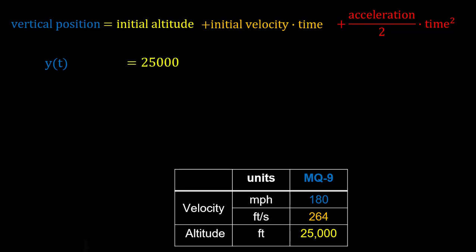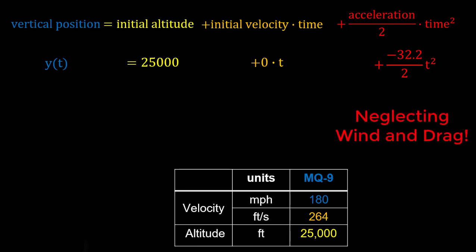And that's going to equal our initial altitude of 25,000 feet plus our initial velocity, which is 0 because we're just dropping it. And finally, our acceleration, which is going to be negative 32.2 feet per second squared because it's going downwards. And of course, we're neglecting any wind or drag in this case. So it'll just be a continual acceleration downwards for this bomb. So our equation for Y of T is 25,000 minus 32.2 over 2 T squared.